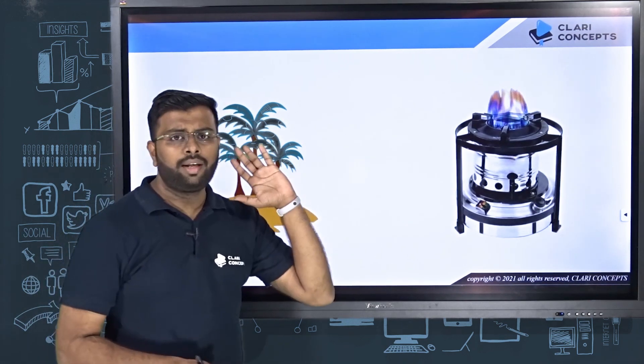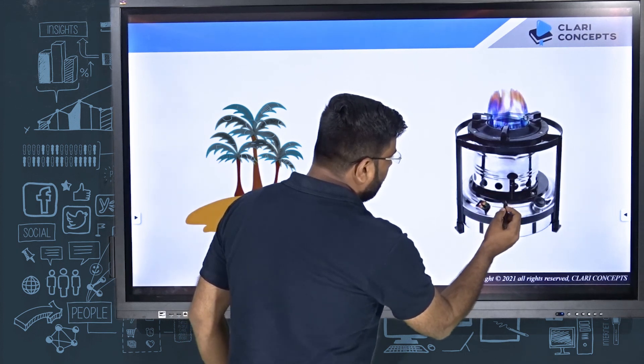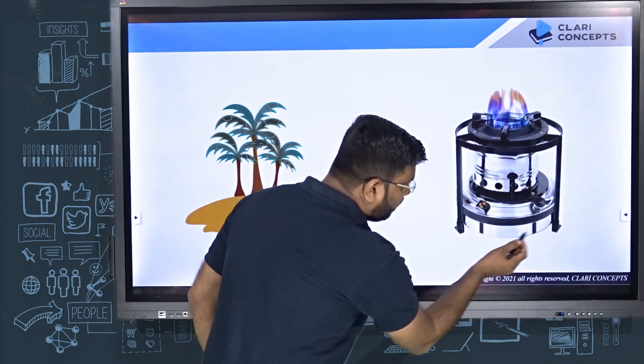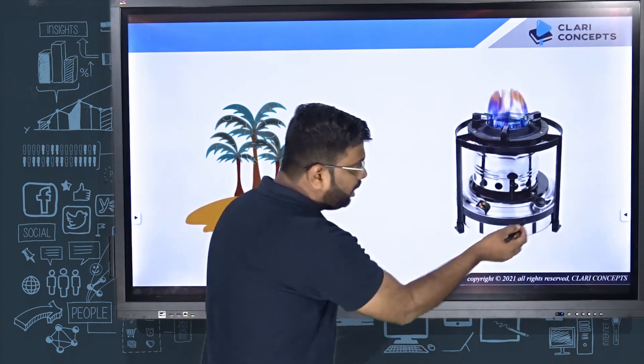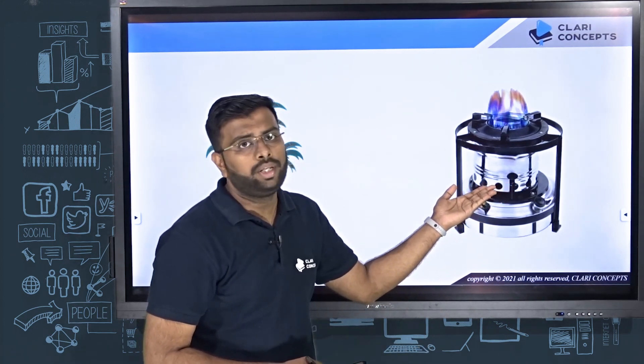If you look at this another example, this is a kerosene stove. You see the stove, the flame is on the top portion, and the fuel is filled in the bottom tank. The kerosene is filled in the bottom tank. Now, how come the fuel traveled upward? There is no pump over here also.